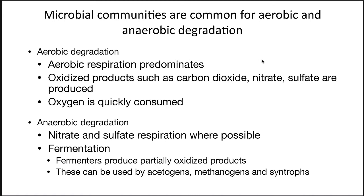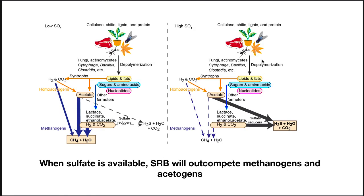Microbial communities are common for both aerobic and anaerobic degradation. In aerobic degradation, aerobic respiration predominates, and oxidized products such as carbon dioxide, nitrate, and sulfate are produced, with oxygen quickly consumed. Under anaerobic degradation, nitrate and sulfate respiration happens where possible, followed by lots of fermentation. Fermenters produce partially oxidized products, which can then be used by acetogens, methanogens, and syntrophs. If there is a lack of sulfate, things get pushed to methane and water. If there is a lot of sulfate around, the sulfate reducers win and products are pushed to hydrogen sulfide, water, and CO2.